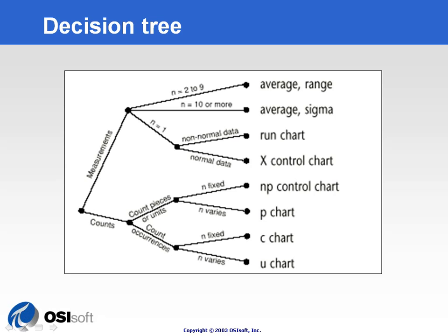Essentially, this decision tree is designed to differentiate between measurements and counts, and according to the number of samples we have available, what is the best chart to use to look at the data.